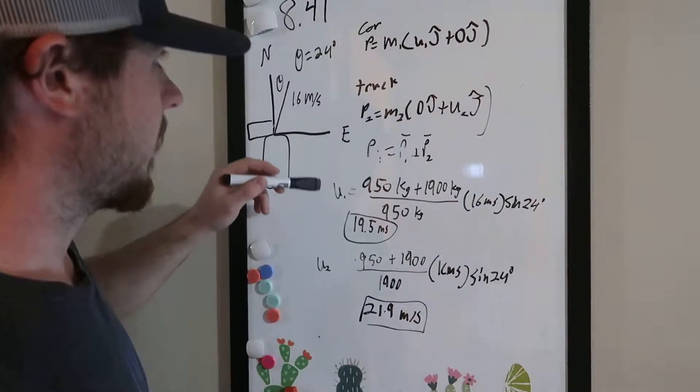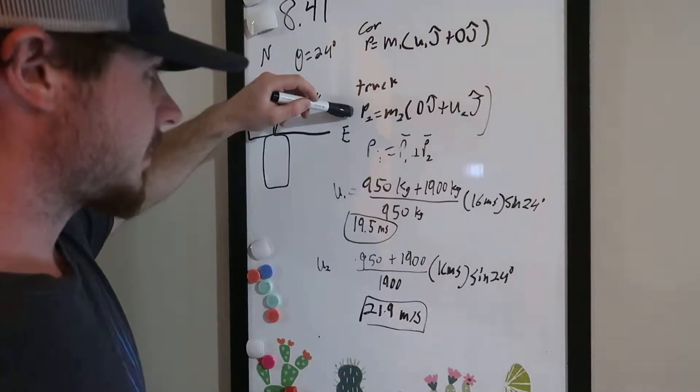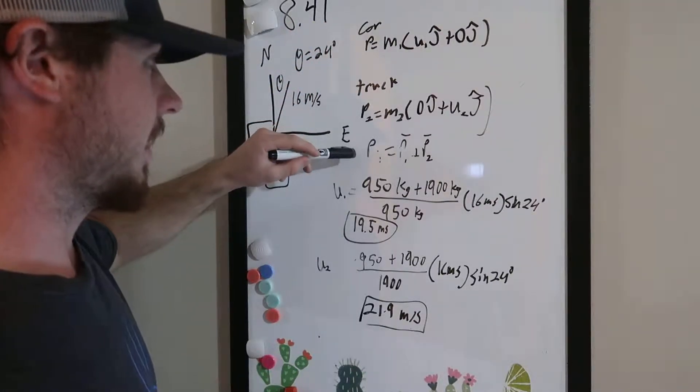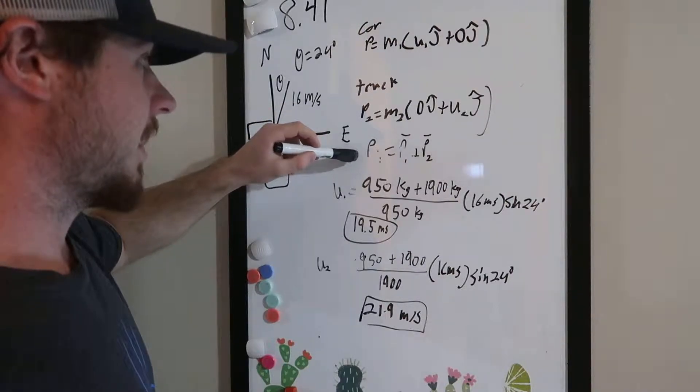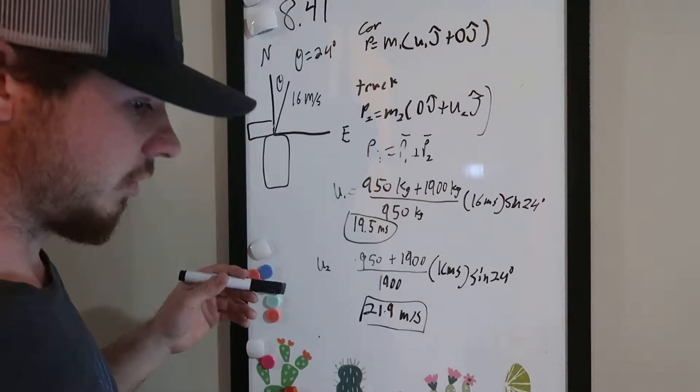or the car before the collision, is represented here, and then the truck is here. And so if we add those together, we're going to get the initial momentum of the system of the car and the truck.